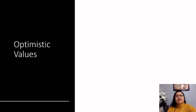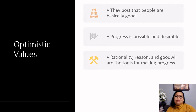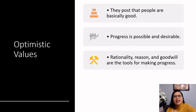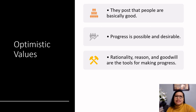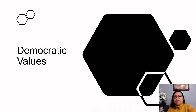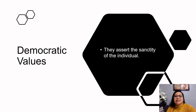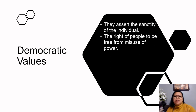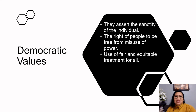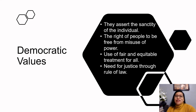Optimistic values assume the following: people are basically good, progress is possible and desirable, and rationality, reason, and goodwill are the tools for making progress. The democratic values of OD practitioners are the following: they assert the sanctity of the individual, the right of people to be free from misuse of power, use of fair and equitable treatment for all, and the need for justice through rule of law.